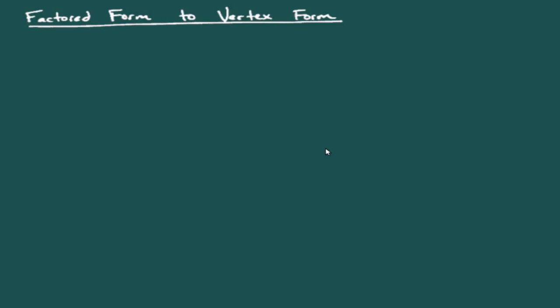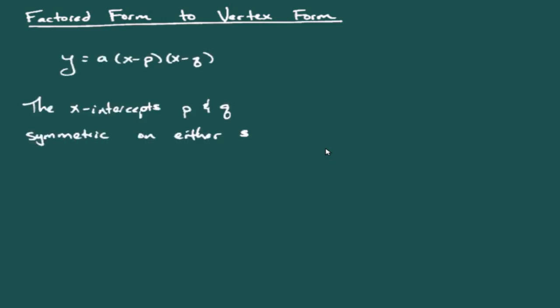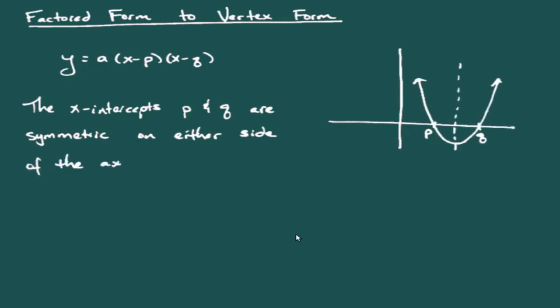Welcome everybody to the next video in our series on parabolas. Today we'll be looking at converting from factored form into vertex form. As a reminder, factored form looks like y = a(x - p)(x - q), where a tells us whether our parabola opens up or down, and p and q are the values of our x-intercepts — where the parabola crosses the x-axis.